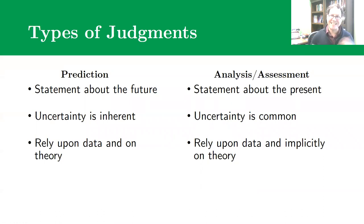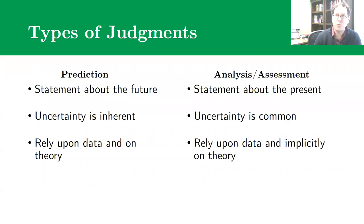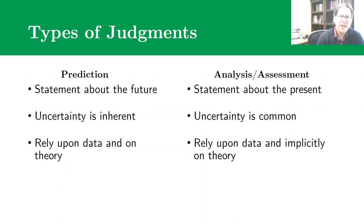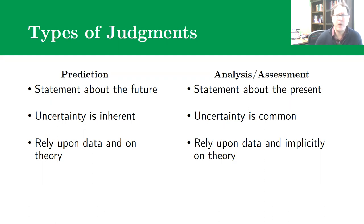It's worth distinguishing between two different types of judgments. One is prediction — a statement about the future, what will happen or what's likely to happen. Then there are judgments about the state of the world today, an assessment or analysis where it's possible to arrive at a true correct conclusion. The future is necessarily unknown, but uncertainty is inherent in prediction and common in any assessment, because countries may obscure their intentions, there's information we don't know, things we can't observe.